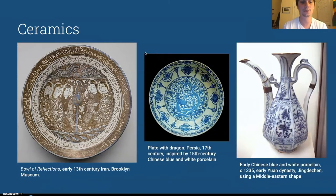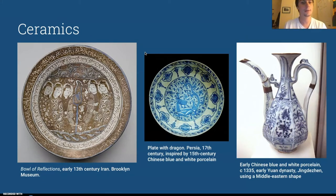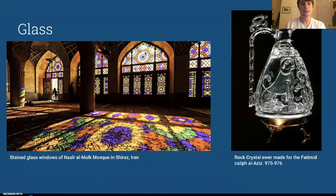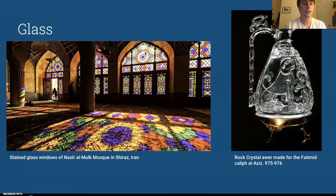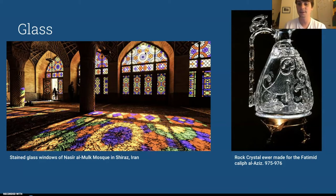Another art form is ceramics — here you see a variety of bowls, pots, and other vessels. Here we have stained glass and an example of rock crystal. The stained glass window in a mosque in Shiraz, Iran is a great example of the beauty and repetition we see in Islamic art. The rock crystal was made for the Fatimid Caliph Al-Aziz around the year 1000.